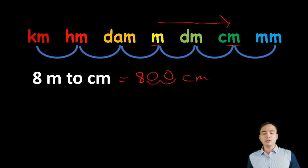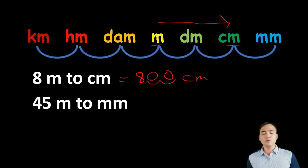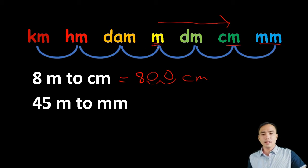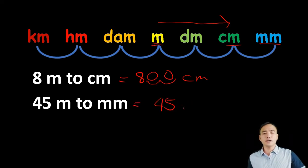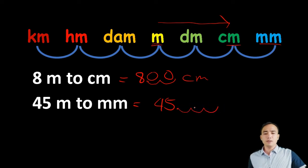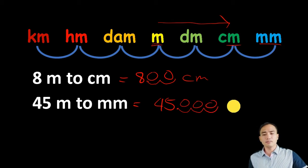In this trick, you don't need to multiply the units. Next example: 45 meters to millimeters. From meter to millimeter is going to the right, and there are three steps going to millimeter. So starting with 45, we move the decimal point three places to the right and put zeros. The answer is 45,000 millimeters. Next: 5 kilometers going to meters — that is three steps away — giving 5,000 meters.